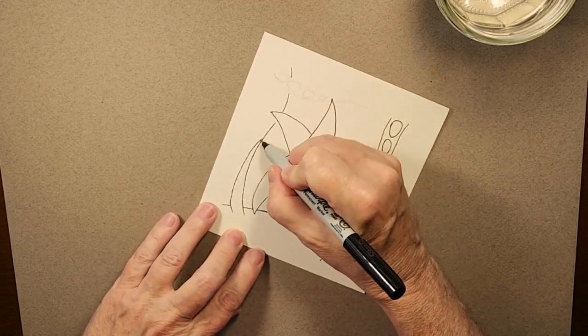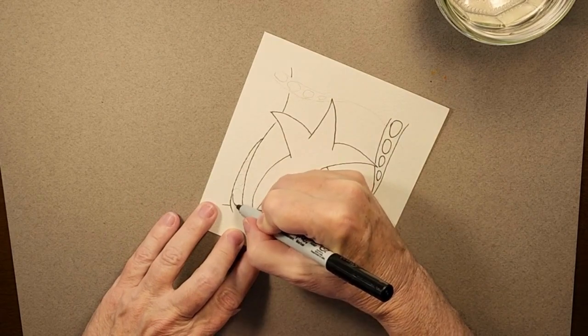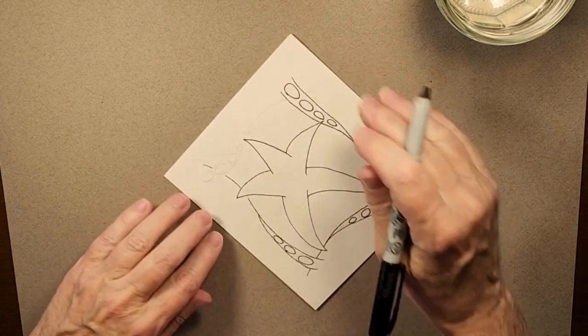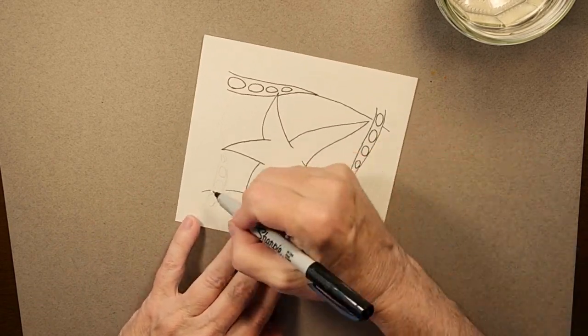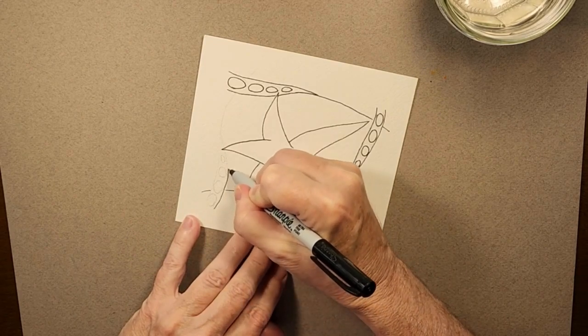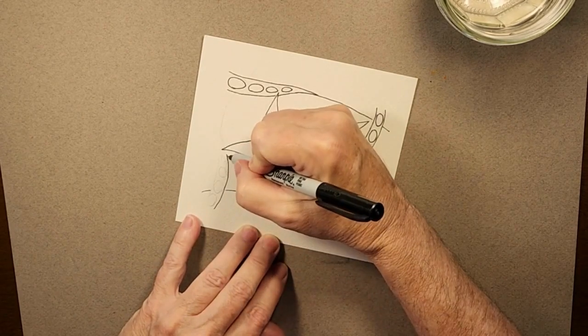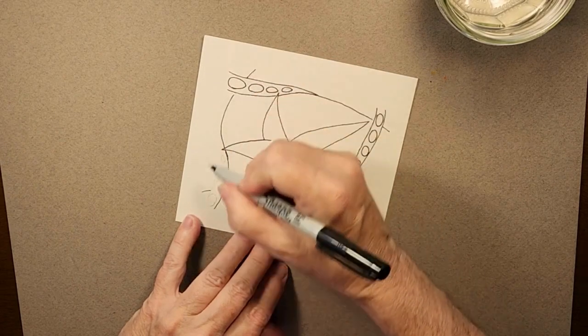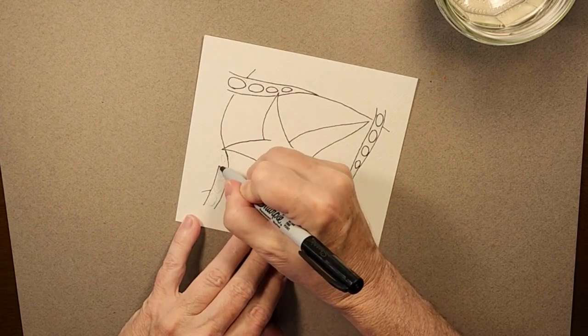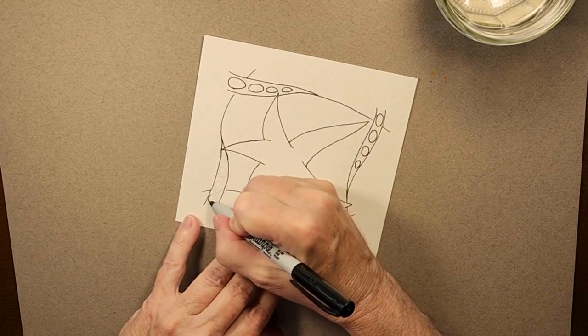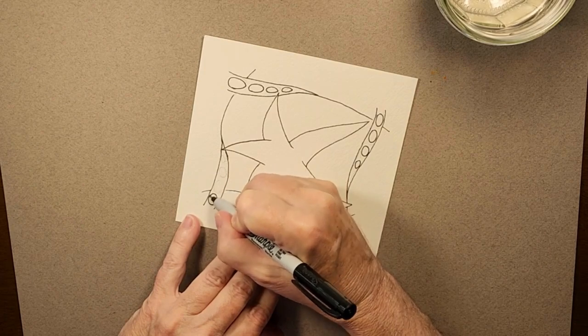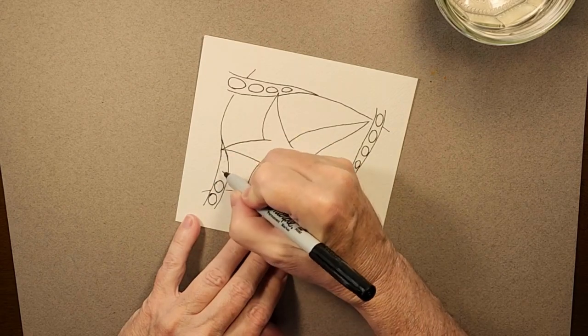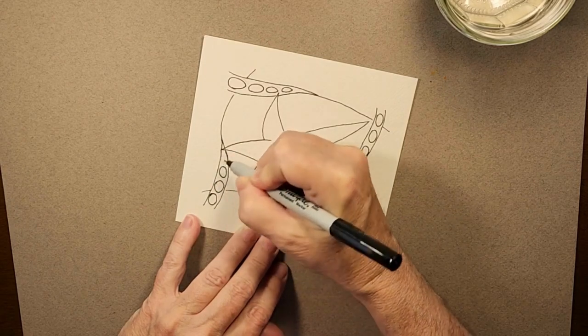And so this marker is a Sharpie marker and it's very important to use a marker that is waterproof so that it doesn't smudge and smear as you're painting with your watercolors. Another nice pen to use is a Micron and with the Micron, they do come in different size nibs. So if you want a finer point or a heavier point, you have some nice options.